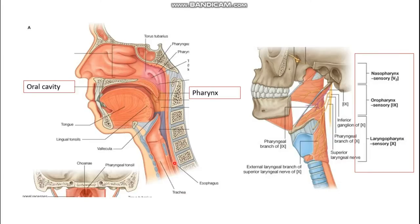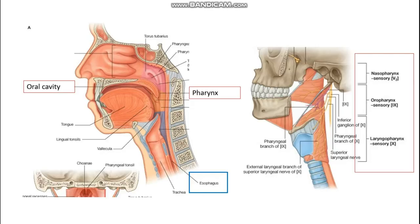The laryngopharynx continues inferiorly with the trachea, which is the windpipe covered in the respiratory module, and it also continues inferiorly with the esophagus, which is the third part of the gastrointestinal tract. In this GIT module, we will teach the anatomy of the gastrointestinal tract from the esophagus down to the rectum. The oral cavity and pharynx will be covered in other modules such as head and neck.